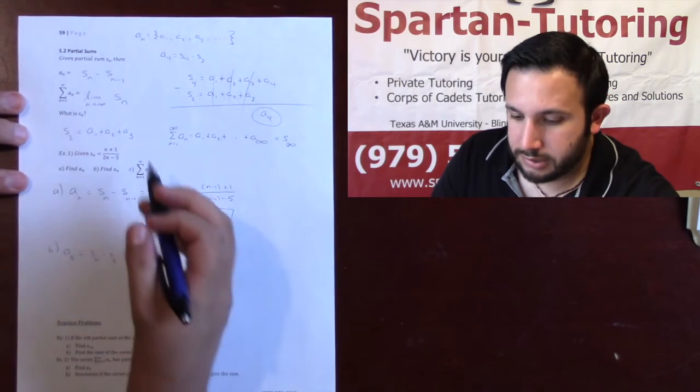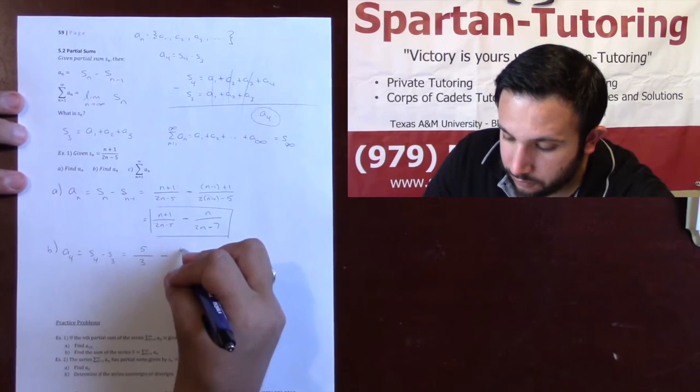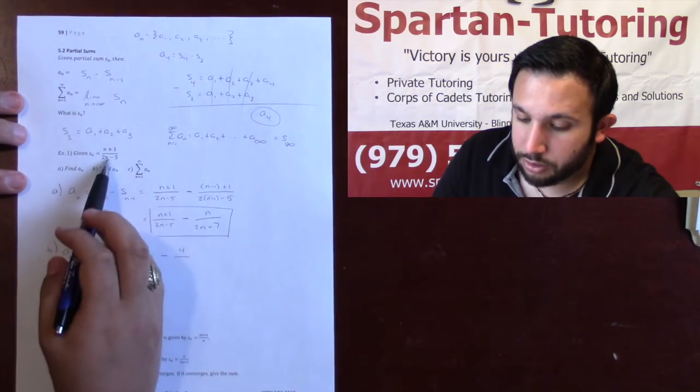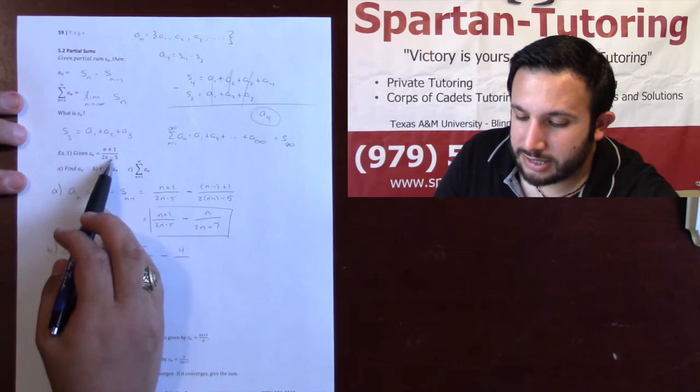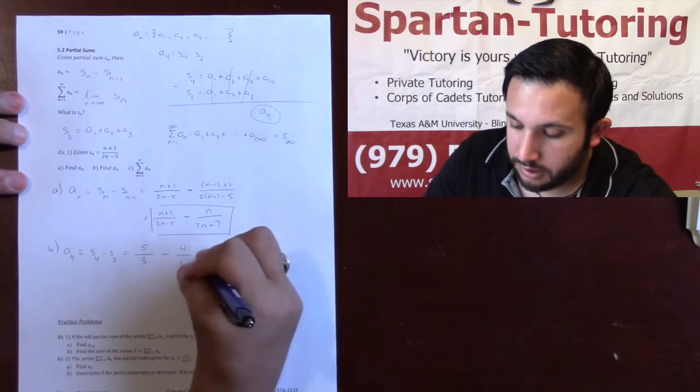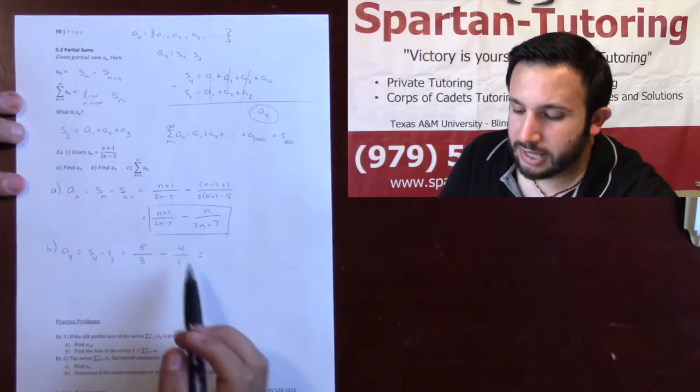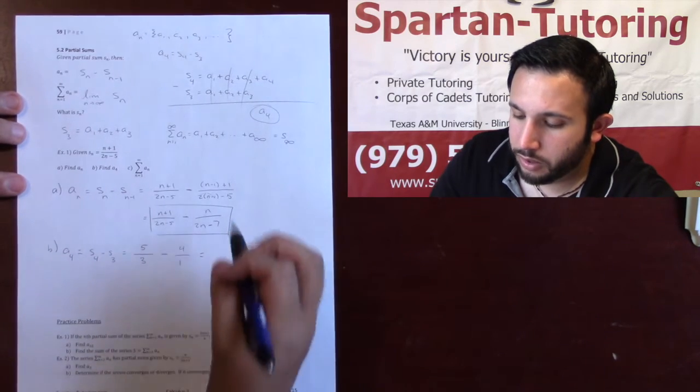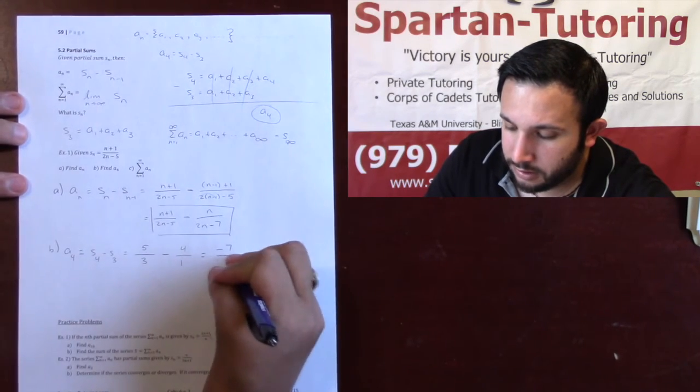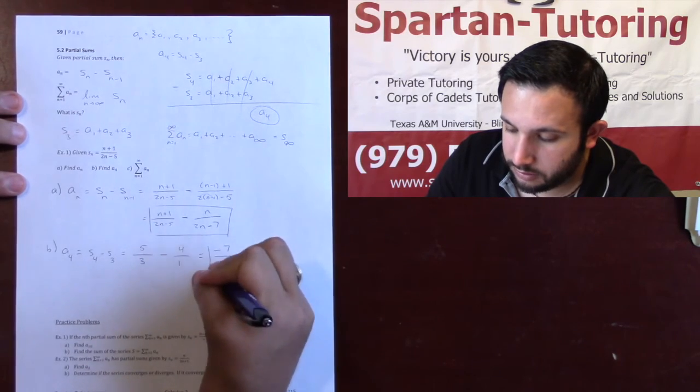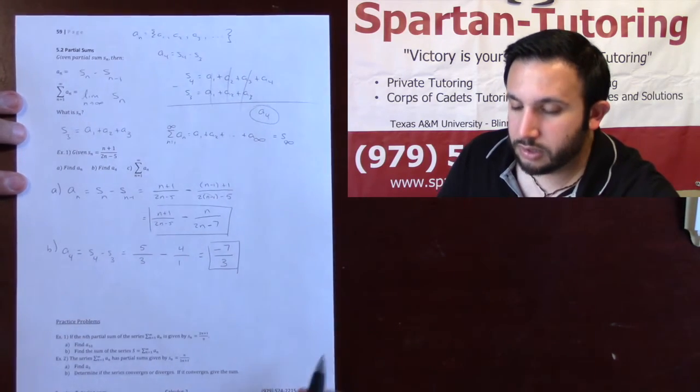Now when I plug a 3 into every n, here, 3 plus 1, that's 4. Then plugging a 3 into here, 2 times 3, that's 6, minus 5, that's 1. And remember that trick I showed you in the last exam, adding fractions? Here, 5 minus 12 is negative 7, and 3 and 1 is 3. So that's part B.